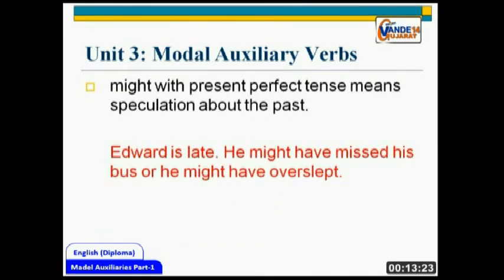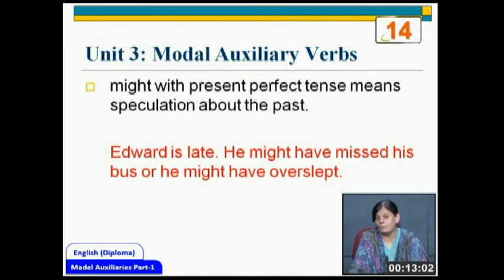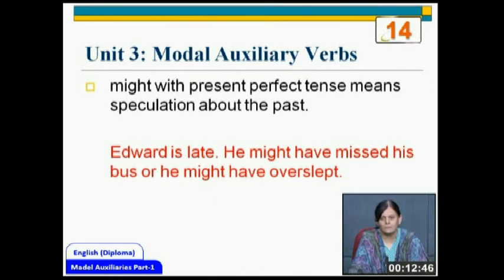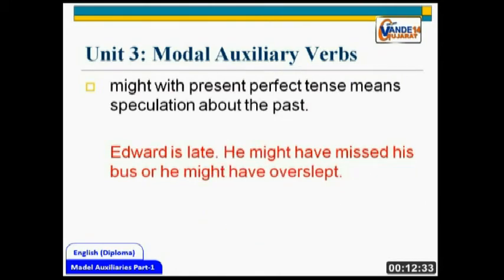Might is also used with present perfect tense when you are speculating about the past. 'Edward is late — he might have missed his bus or he might have overslept.' The situation is he is late, but you are talking about what would have happened in the past. You don't know; you are speculating, just assuming and guessing. In such situations when you are guessing about somebody's behavior in the past, you will use 'might'. To recap: 'might' expresses possibility in the present or future, and speculation about the past using present perfect tense.